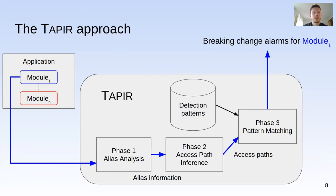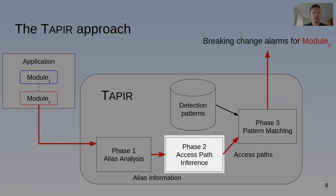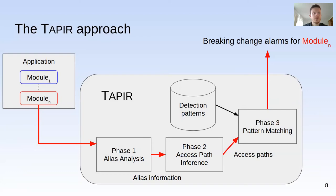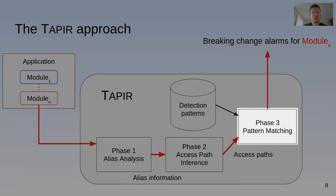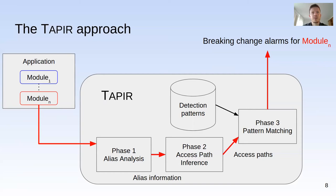A run of Tapir is separated into three different phases: first, a lightweight alias analysis; then, an access part inference analysis that assigns an access part to each expression in the module. The access parts are matched against the detection patterns in the third and final pattern matching phase. For each match, Tapir decides whether the alarm should be marked as high or low confidence. Matches marked with high confidence are in practice never false positives, ensuring the application developer must only manually examine a fraction of the alarms.